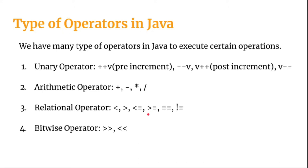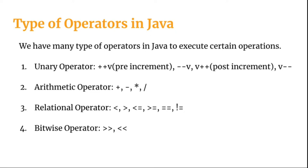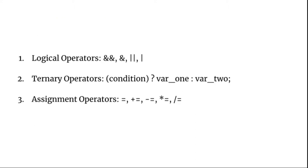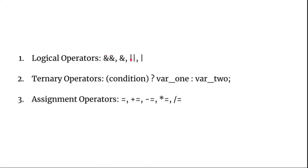We also have bitwise operators — right shift and left shift. These are used to shift a number to the left or to the right by a certain specified value. Next are logical operators: logical AND (&&) and logical OR (||). We also have bitwise AND (&) and bitwise OR (|).